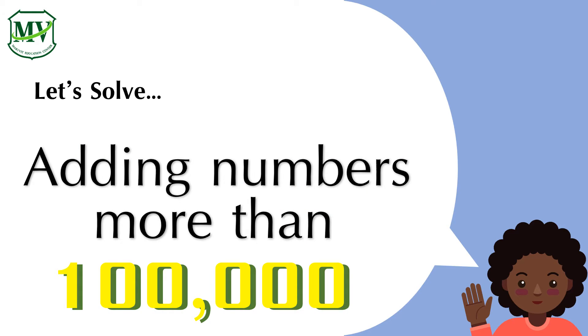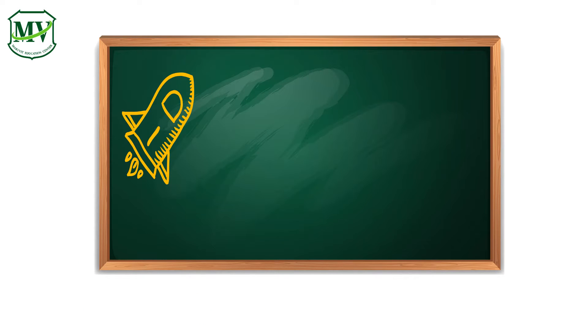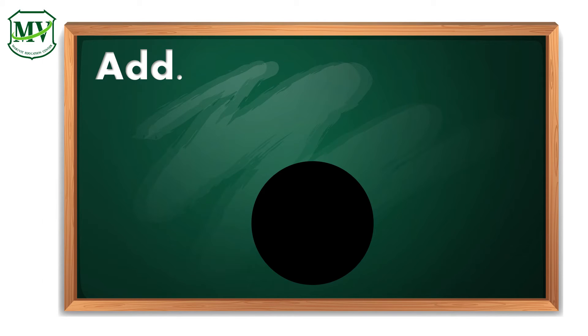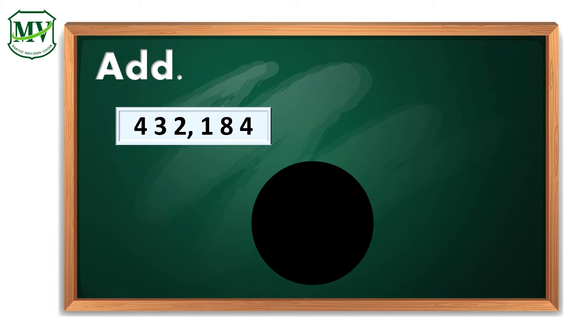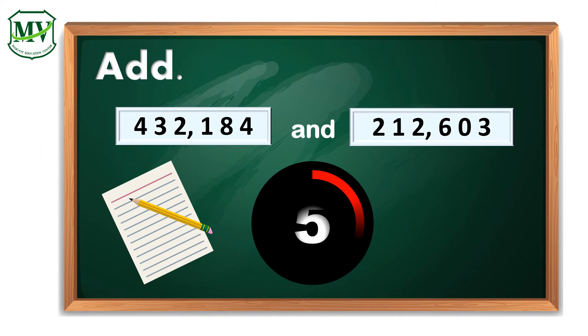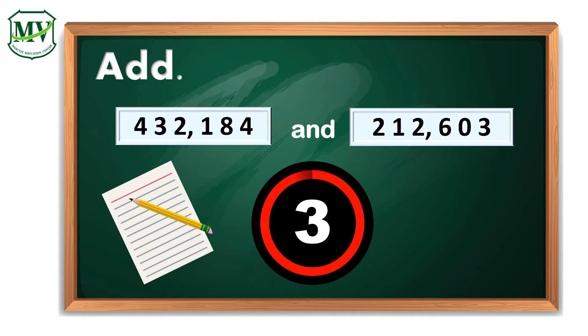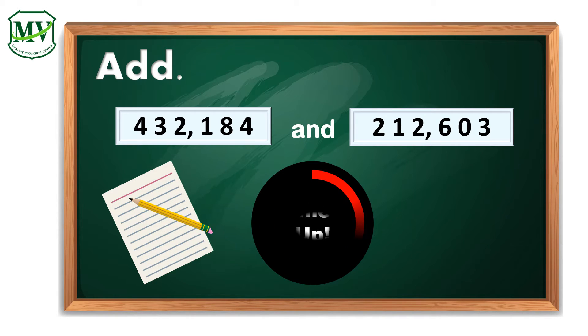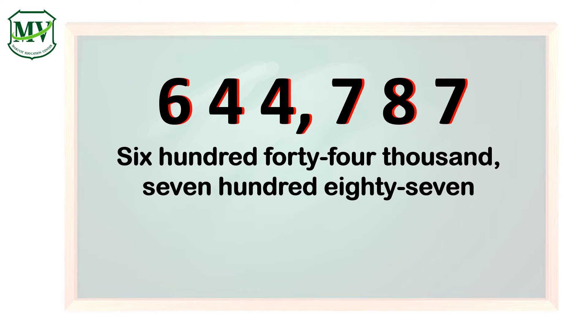Let's solve adding numbers more than 100,000. Solve this addition problem in 5 seconds. Find the sum of 432,184 and 212,603. The timer starts now. The answer is 644,787.